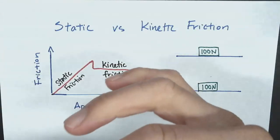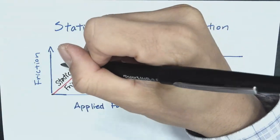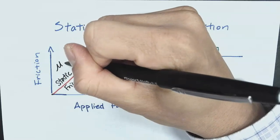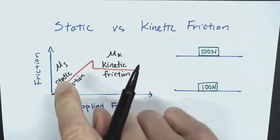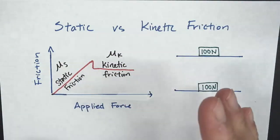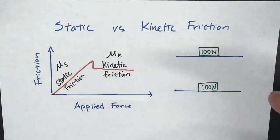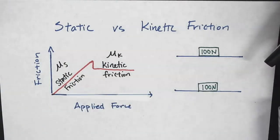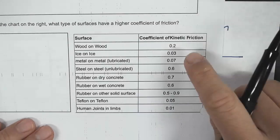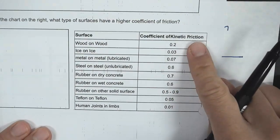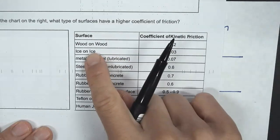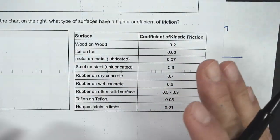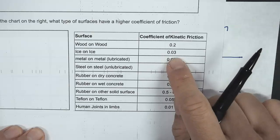Now, to calculate friction, we need to know something called the coefficient of friction. We have a coefficient of friction for static friction and also for kinetic friction. This just tells us how sticky the two surfaces are — whether you're using wood on wood or ice on ice. We have charts we can look up to find the coefficient of friction. For example, wood on wood has a kinetic coefficient of 0.2, but ice on ice, because it's much more slippery, has a coefficient of kinetic friction of 0.03.